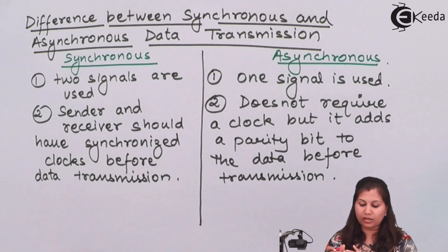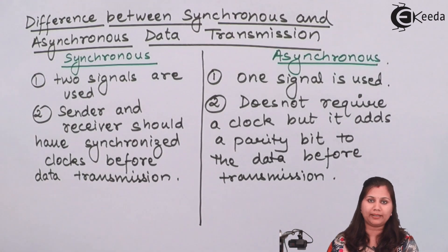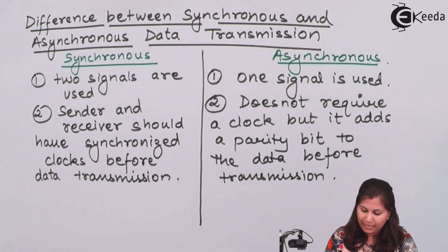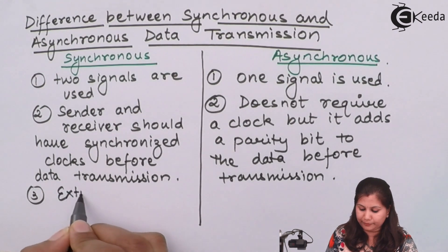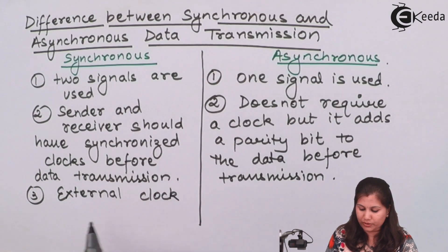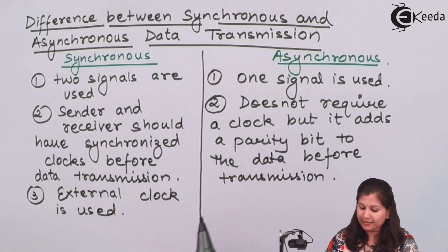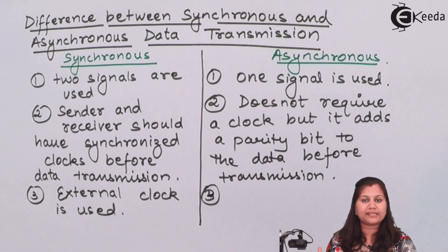In synchronous, a clock is required and must be synchronized. Whereas in asynchronous, no clock is required — instead, a parity bit is added. The third difference is that synchronous uses an external clock, whereas in asynchronous, the sender and receiver use their own internal clocks.